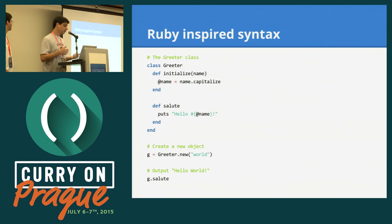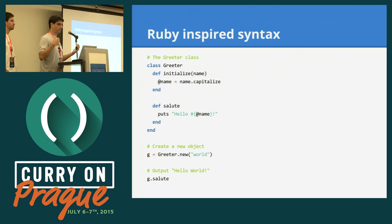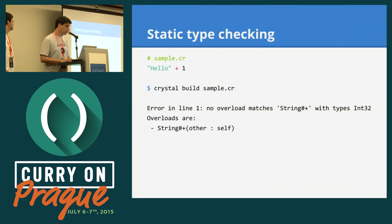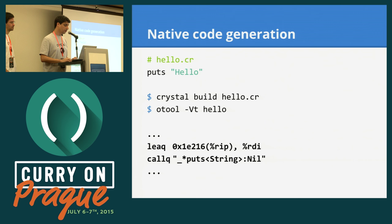We inherited the syntax from Ruby. This simple code here is either a Ruby or a Crystal program. Not every Ruby program is a Crystal program and not every Crystal program is a Ruby program, but we inherit many of the things we like from Ruby. It's statically type-checked, so we can get compile-time errors about missing overloads or things like that. It generates a very efficient binary executable, and we make a special emphasis on this in every aspect of the language.